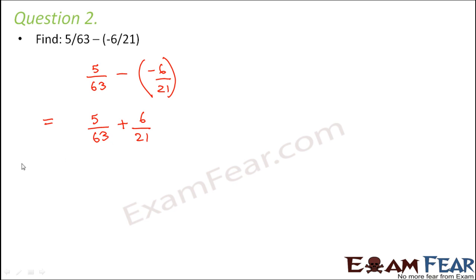So here also you have different denominators. So let us find out LCM of 21 and 63, which is 63. For the first term it is already 63. So what about the second term? 6/21. What will you multiply so that you get 63 as the denominator? You multiply it with 3. So you get 18/63.